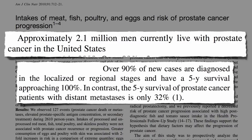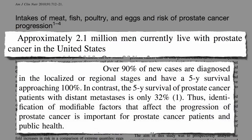Identification of modifiable factors that affect the progression of prostate cancer deserves study. Researchers at Harvard took more than a thousand men with early-stage prostate cancer and followed them for a couple of years to see if there's anything in their diet associated with a resurgence of the cancer, such as a spread to the bone.